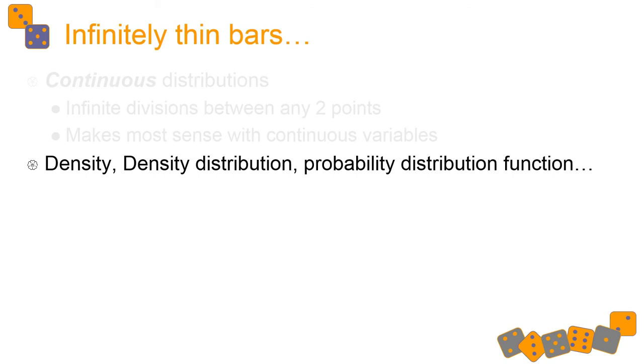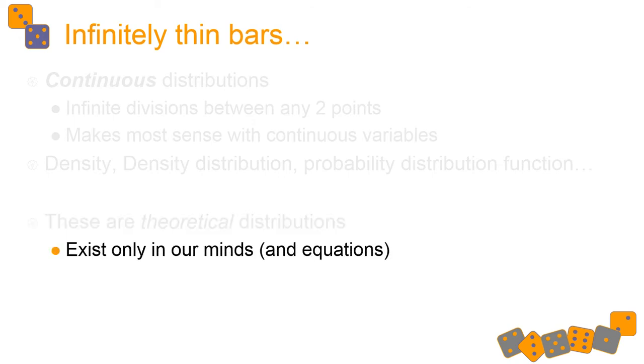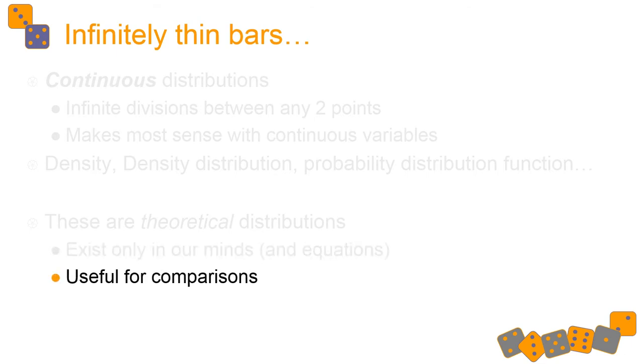This only makes sense with continuous variables most of the time. We use these concepts of density, density distribution, probability distribution function. The density is the height of the curve at any one time, the height of one of those tiny, super thin bars. Its height is density, and that density is essentially kind of like a probability. We group all of these densities together across this curve into probability functions, probability distribution functions, density distributions. These are theoretical distributions, and they don't exist in real life. They only exist in our minds and in equations. They're useful, however, for comparisons.